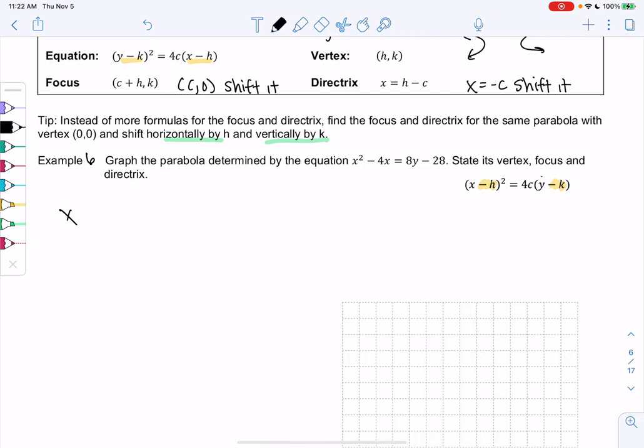So completing the square, x² - 4x, I'll leave a gap, equals 8y - 28. To complete the square, we're going to take that middle term and divide by 2. We get negative 2. Then we square negative 2 to complete the square, which is 4.